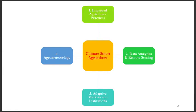In the remaining part of this lecture, we will briefly go through four aspects of climate-smart agriculture: one, improved agriculture practices; two, data analysis and remote sensing; three, adaptive markets and institutions; and four, agrometeorology.